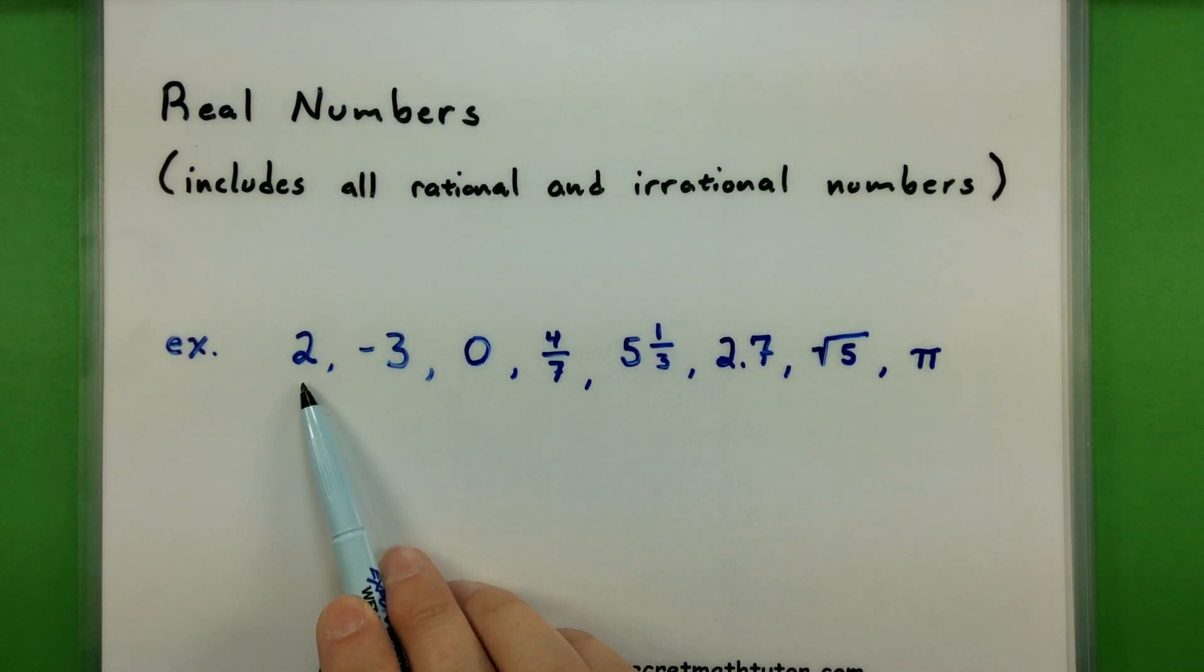So all of our first few groups, like the natural numbers and the whole numbers, those fall into the category of also being real numbers. So you'll see I have things like 2, negative 3, 0, all of those considered real numbers.